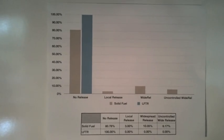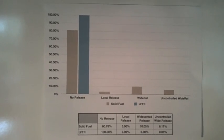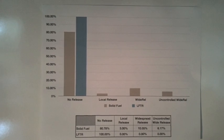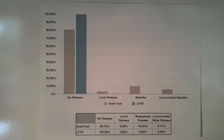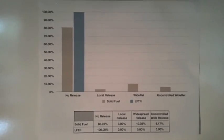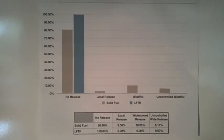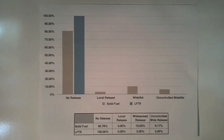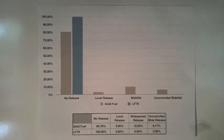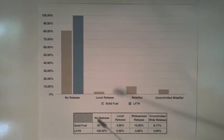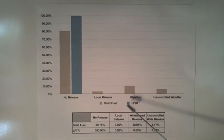Here is a bar chart containing my simulation results for both the solid fuel uranium reactor and the lifter for 10 million runs of the computer simulation. Yellow is the solid fuel. Blue is the lifter.